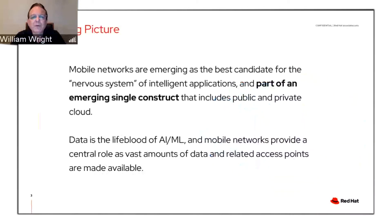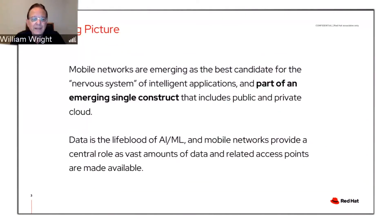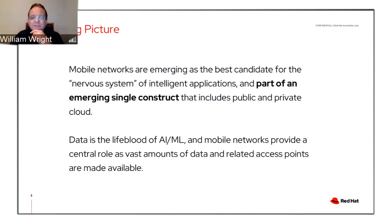Mobile networks are emerging as the best candidate for the nervous system of intelligent applications, part of an emerging large-scale construct that includes public and private cloud. Data really is the oxygen or lifeblood of AI and ML. Mobile networks play an unusually central role as enormous amounts of data and access points are made available through the network itself — an amazing superhighway of data.